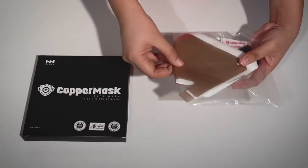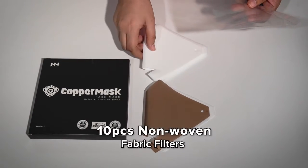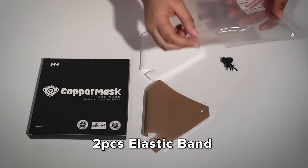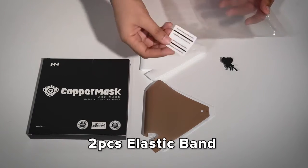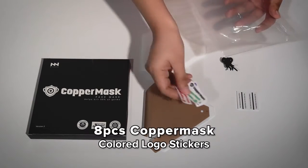We have here one piece of the new and improved Copper Mask antimicrobial film layer, 10 pieces non-woven fabric filters, 2 pieces elastic bands, and also our new addition, 2 pieces seal stickers and 8 pieces Copper Mask colored logo stickers.